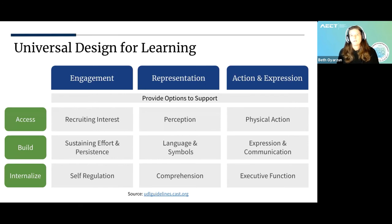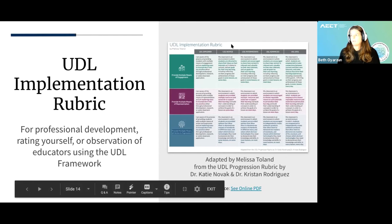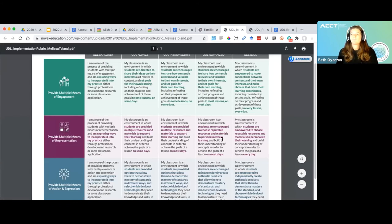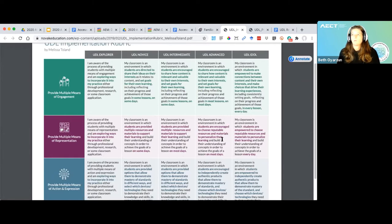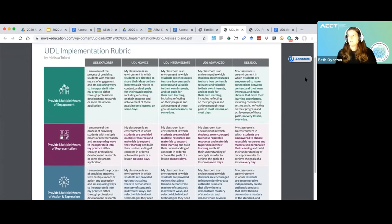We were trying to think along the same lines as the accessibility resources — maybe we could simplify and find resources to help people get started with this framework. The first one is a UDL implementation rubric. It's a one-page rubric that shows how you can get started and what it might look like in a classroom, whether online or face to face. If you're an explorer, you'd be on the left, just getting started with UDL, then move through novice, intermediate, advanced, and a UDL idol.